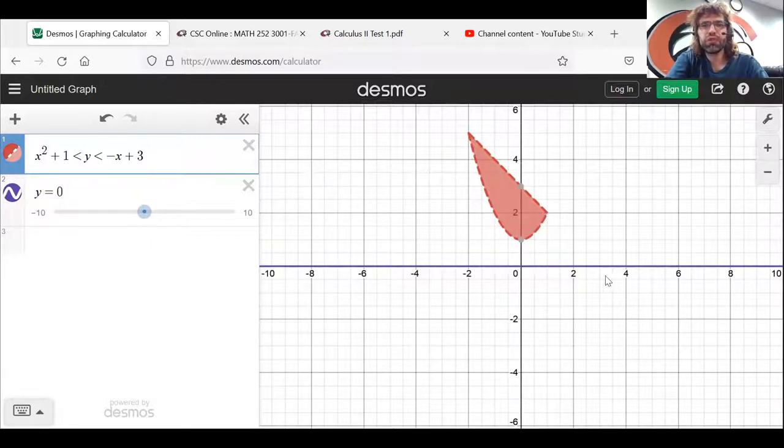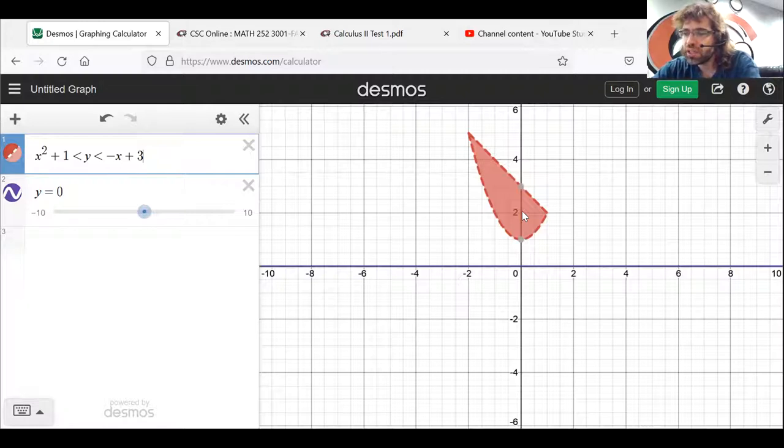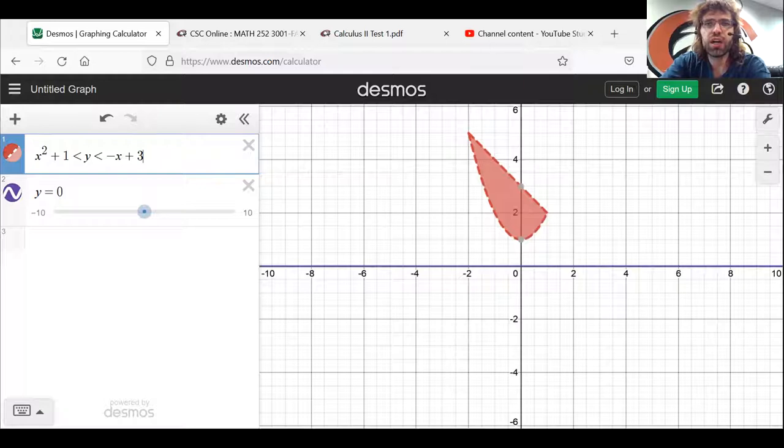And you see, we are rotating it around this line, y equals zero, that is not connected to the region. And this is where the washer method shows up.